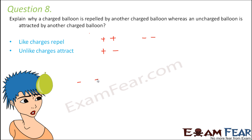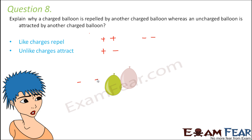But if you take a charged balloon and bring it near an uncharged balloon, they attract each other. The charged balloon is negatively charged, and negative charges inside it cause positive charges to move toward the uncharged balloon's near side and negative charges to move away. This creates attraction. That is why a charged balloon repels another charged balloon but attracts an uncharged balloon.